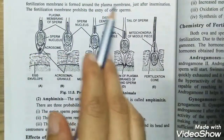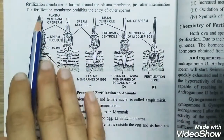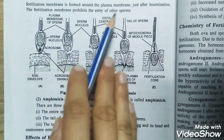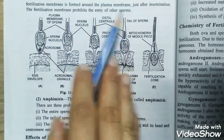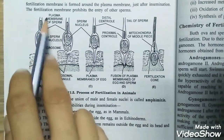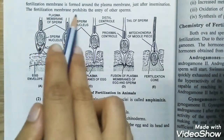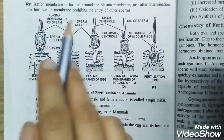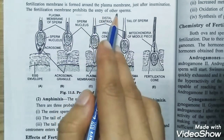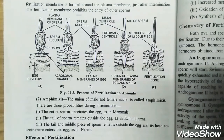Just after insemination, a thin fertilization membrane is formed around the plasma membrane. The fertilization membrane prohibits the entry of other sperms into the egg. It is helping in monospermy and not favoring polyspermy.